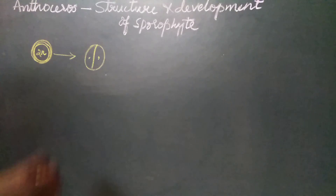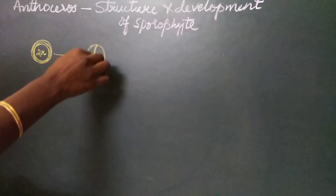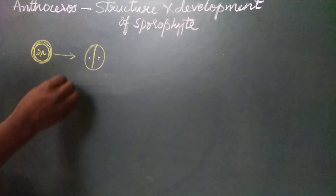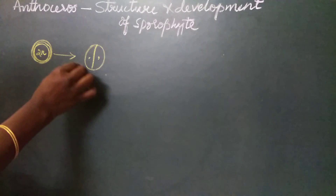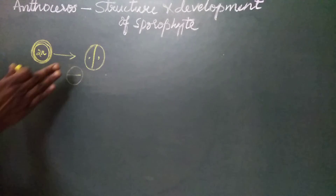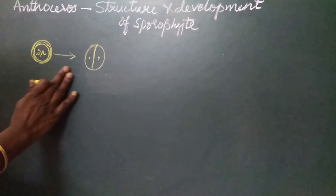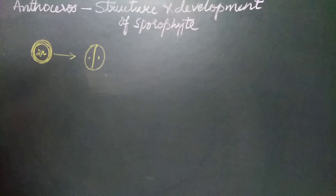In Anthoceros levis, it is a vertical oblique division. In Anthoceros crispulus, it is a transverse division. So the first divisions are different in different species.